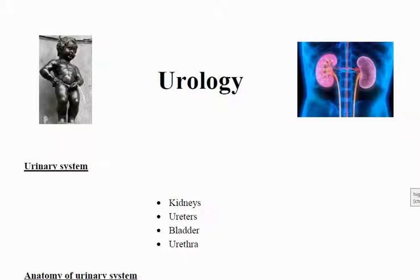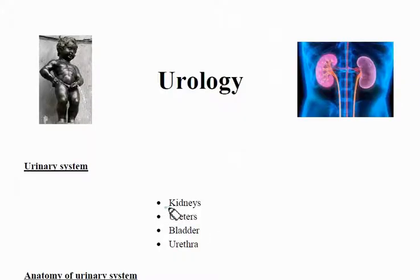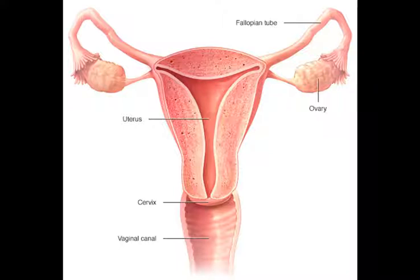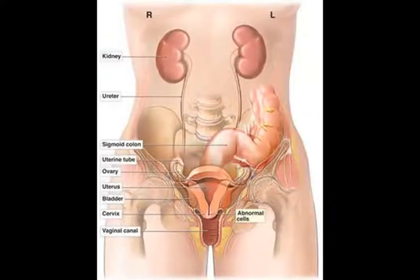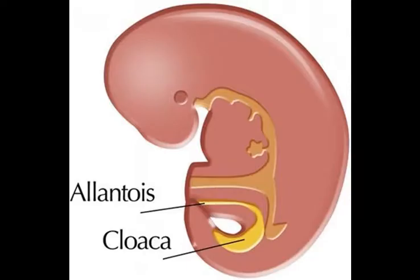For this time, I would like to focus on urology, which includes the urinary tract and male reproductive organs: kidneys, ureters, bladder, urethra, and prostate. Female reproductive organs are not included here, but I introduce some of them as well as the urachus, a fibrous remnant of the allantois, which leads to the bladder.